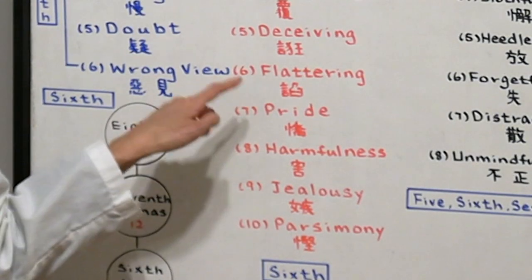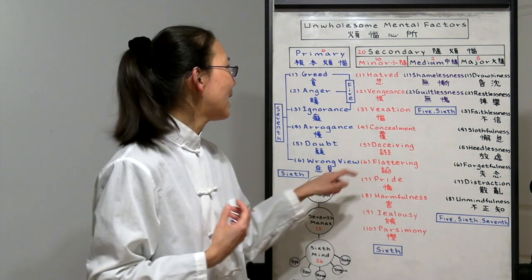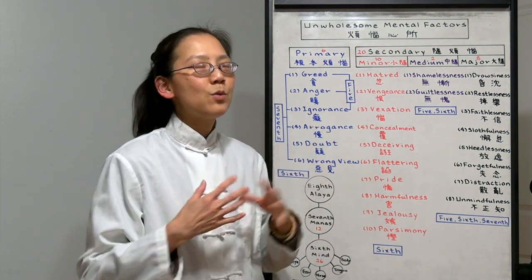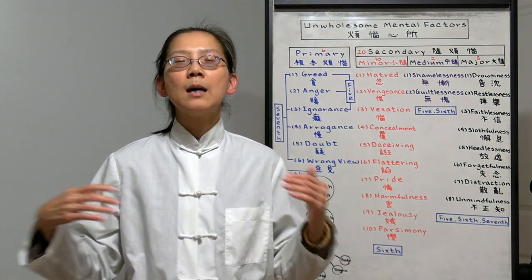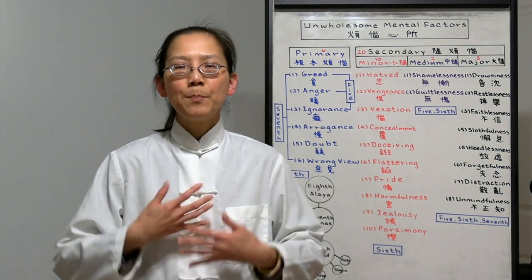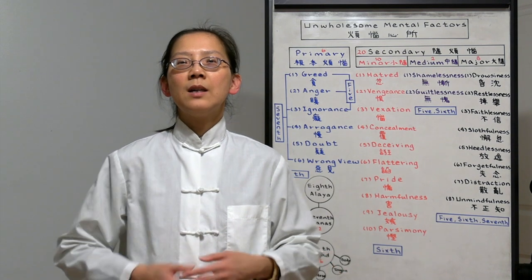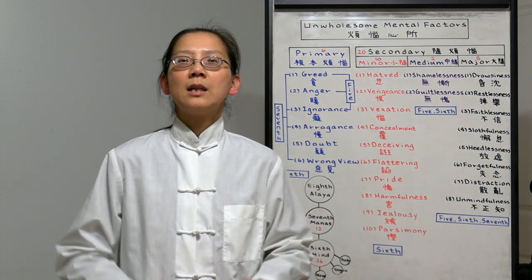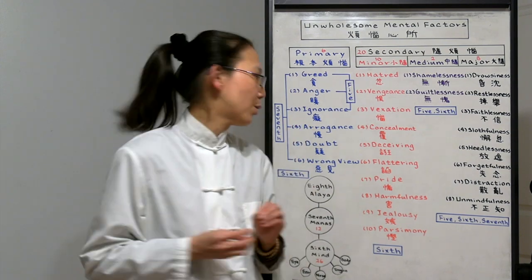Number seven is pride. Pride is being proud of ourselves. It's kind of like arrogance. But you have to compare with others to be arrogant. Pride even without comparison. You're just naturally proud of yourself, thinking you're better. Even when you're poor, you can still be proud. Even if you have no education, you can still think I'm very smart. That's all because of our natural pride.